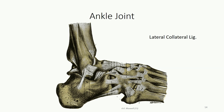The ankle joint is reinforced by collateral ligaments similar to those at the elbow. On the lateral aspect are three separate bands collectively referred to as the lateral collateral ligaments: the anterior talofibular ligament runs from the lateral malleolus to the anterolateral aspect of the talus; the calcaneofibular runs from the lateral malleolus inferiorly to attach to the calcaneus; and the posterior talofibular connects the talus and fibula posteriorly to the lateral malleolus.